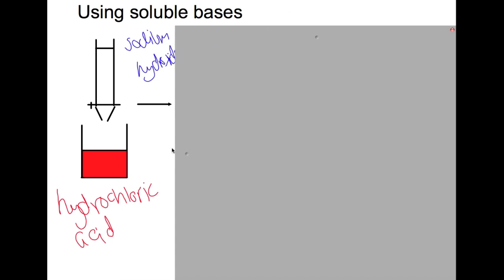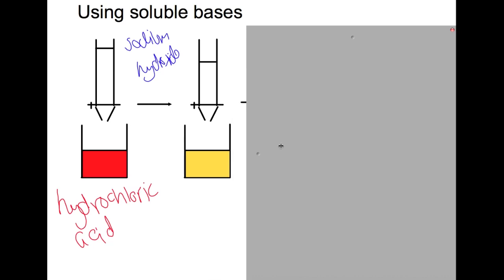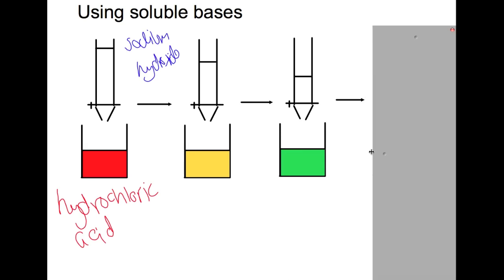If we were to use an indicator such as universal indicator at the start of our reaction it would be red. Now we would be aiming to go to neutral which would be green. So as we slowly add our base into the acid you'll see the indicator change color. So now it is less acidic because we've added some sodium hydroxide which has started to react with the acid. We eventually get to a point where we reach the neutral point, so we've added just the right amount of sodium hydroxide to neutralize all of the acid and no more.